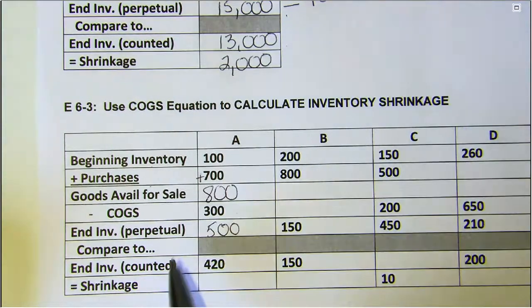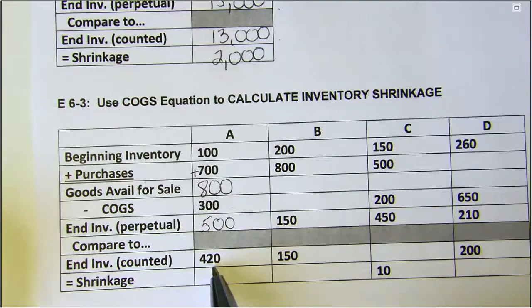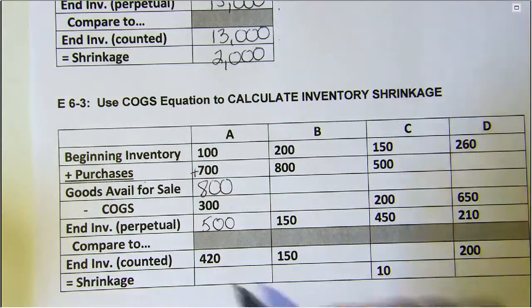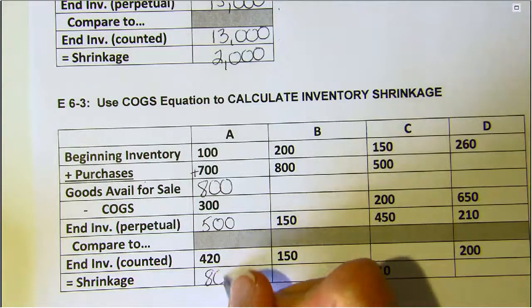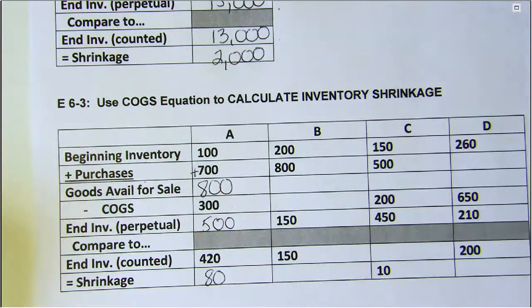That $500 would be according to our perpetual records. When we count them, we only have $420 of inventory on hand. So we lost $80 due to theft, fraud, or error.